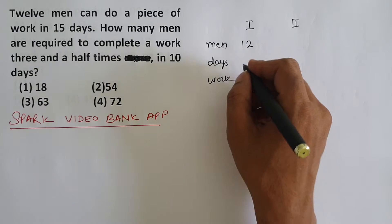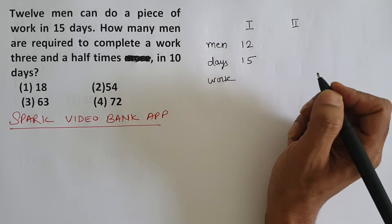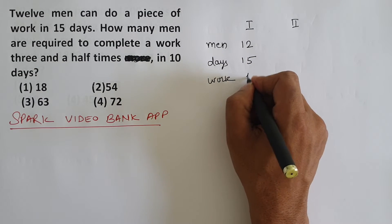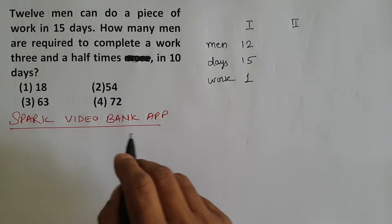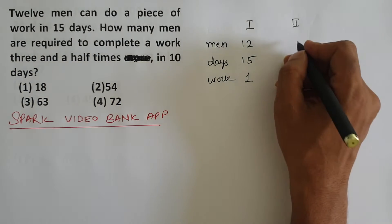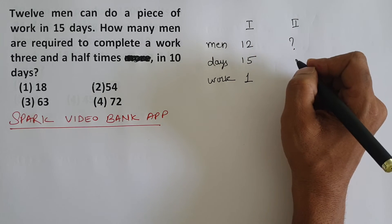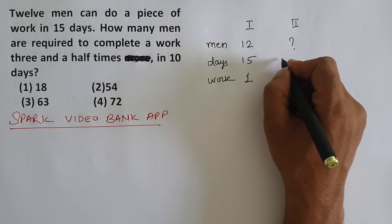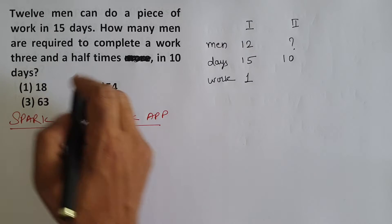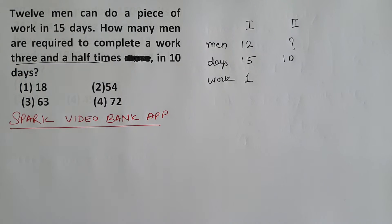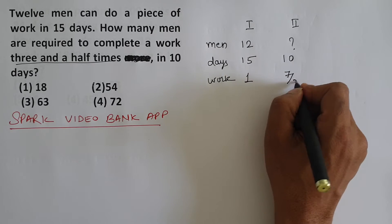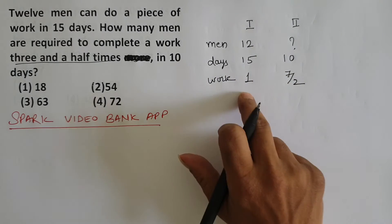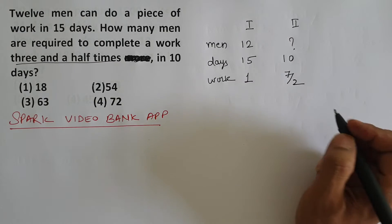So it says that 12 men initially, and they finished work in 15 days, and let's say work was one unit. They're asking how many men will be needed if work needs to be completed in 10 days and the work is 3 and a half times the previous work. 3 and a half times means 3.5, that is 7 by 2 work. Earlier it was 1, now it's 7 by 2.